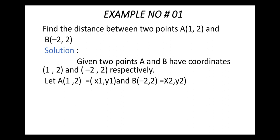Given two points A and B have coordinates (1, 2) and (-2, 2) respectively. Let A(1, 2) = (x1, y1) and B(-2, 2) = (x2, y2).